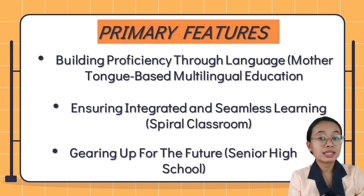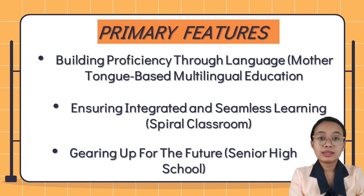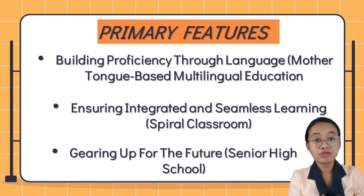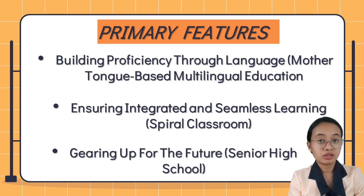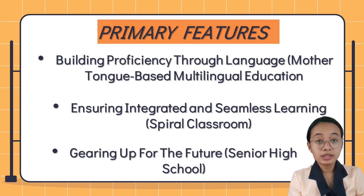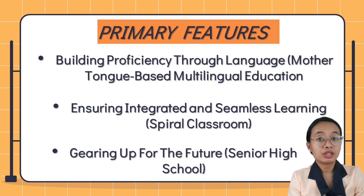Ensuring integrated and seamless learning, or the spiral progression: subjects are taught from the simplest principles to more sophisticated concepts across grade levels in spiral progressions. As early as primary school, kids develop knowledge in fields such as biology, geometry, earth science, chemistry, and algebra, ensuring mastery of information and abilities after each level.